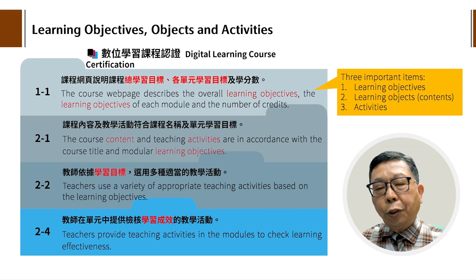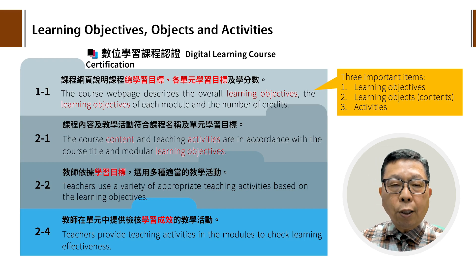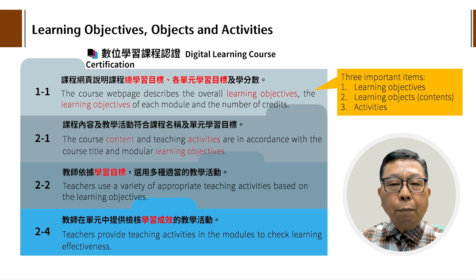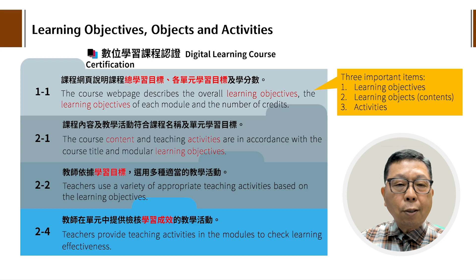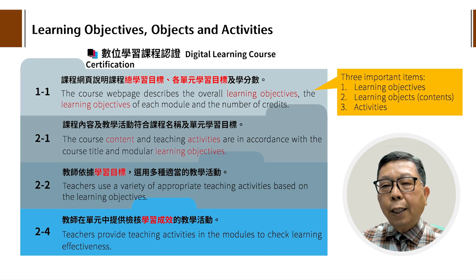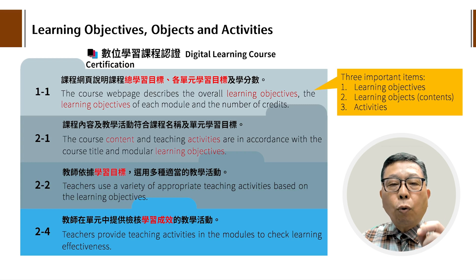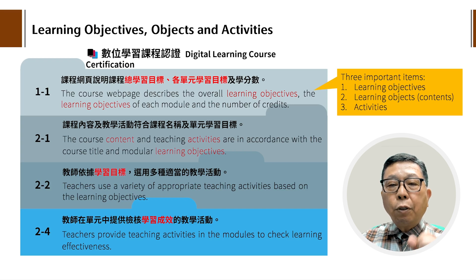在教育部的课程认证里面，有大概几十条的规范，让我们去Evaluate看我们能够达到哪些要求标准。它原来有100多条，现在已经缩减到只剩三四十条。我从中挑四条来强调它的重要性。比如说第一条就是课程的网页要说明课程的总学习目标，各单元也都要讲解。